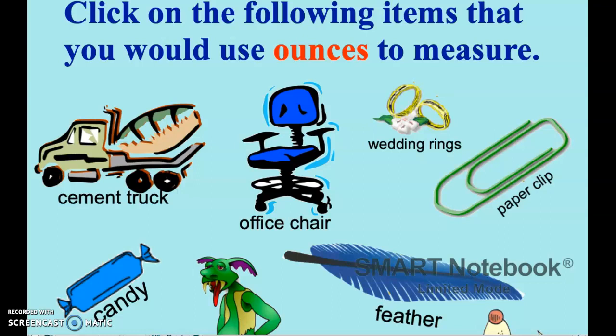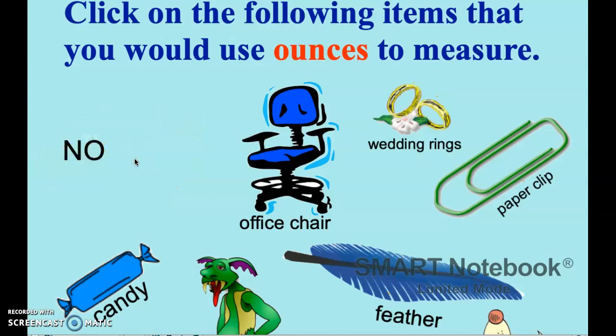We're going to click on the following items that we could use ounces to measure. Let's look at the cement truck. A cement truck is very large and weighs quite a bit, so ounces would not be used to measure the cement truck. An office chair — it's not extremely heavy, but it's heavier than ounces, so I'm going to say no for the office chair as well.